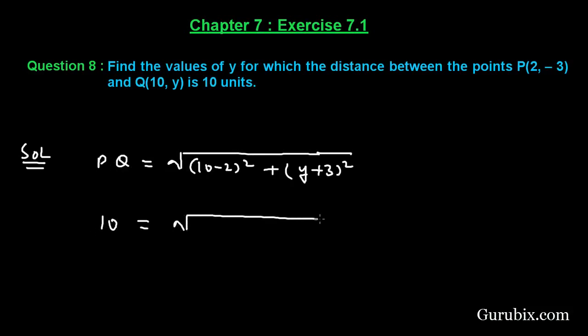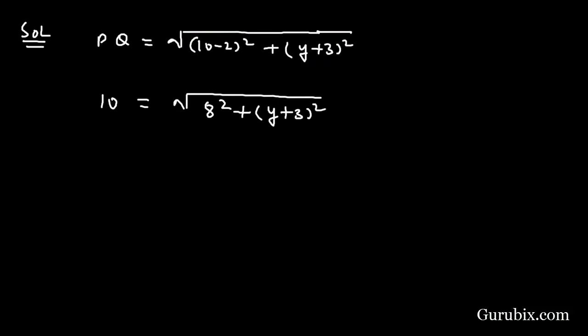This means 10 equals square root of 8 squared plus (Y + 3) squared. And now we shall square both the sides to get rid of this square root.